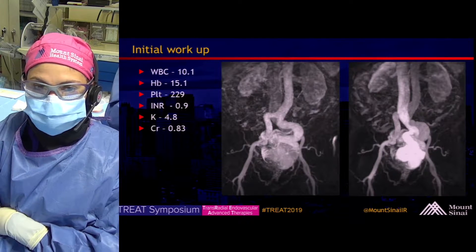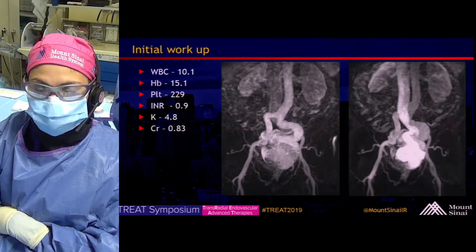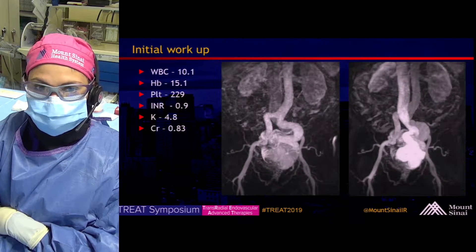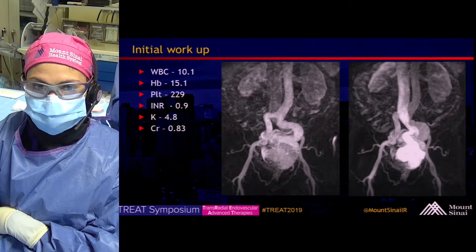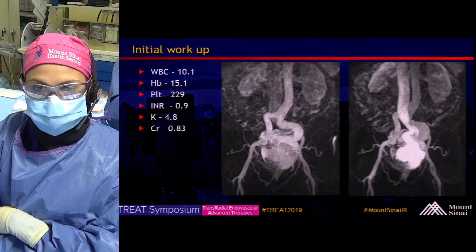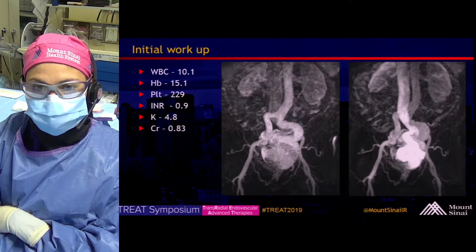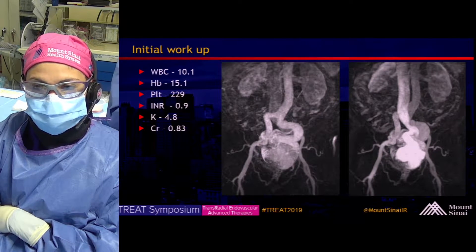This is his initial workup. You can see on the left-hand image large arterial feeders — multiple of them — and then the large draining vein on the right.